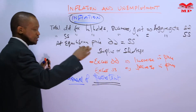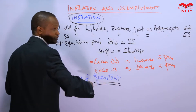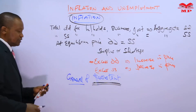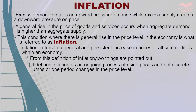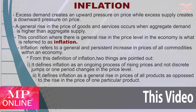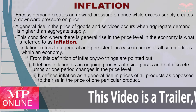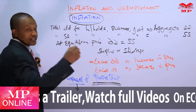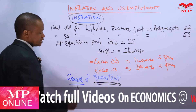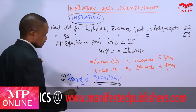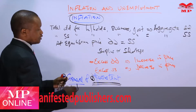From this definition, two things come out clearly. Number one: inflation is an ongoing process of rising prices, not discrete jumps or one-period changes. We are not talking about prices increasing one month then being stagnant the next — continuously, January, February, March, you can observe a general increase in prices. Number two: inflation is a general rise in prices of all products, not just one particular product.